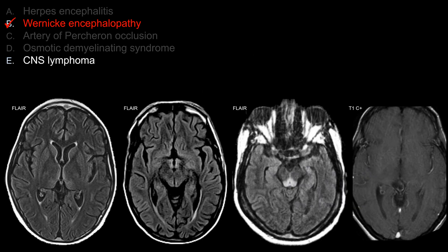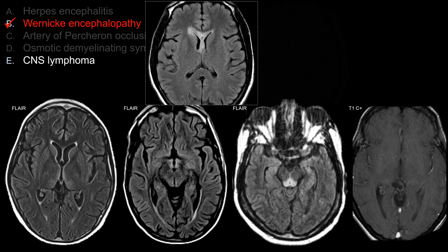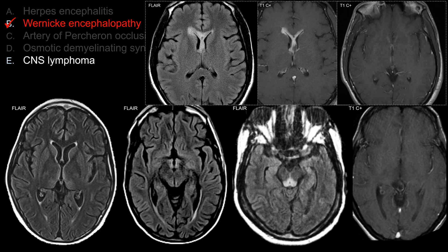Lastly, CNS lymphoma. CNS lymphoma is one of those great mimickers that can look like basically anything. So it's a good differential diagnosis to think about if things don't make sense. However, CNS lymphoma typically shows some degree of enhancement, even in an immunocompromised patient, and should also show restricted diffusion due to hypercellularity — it's a small blue round cell tumor. While it's possible this could be CNS lymphoma, it's not the best choice, and in our particular case you really don't see much enhancement at all, making CNS lymphoma far less likely.